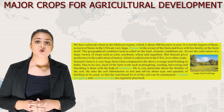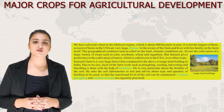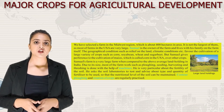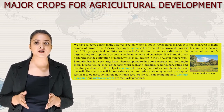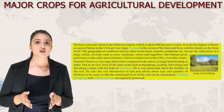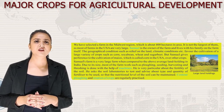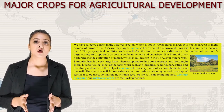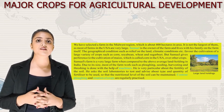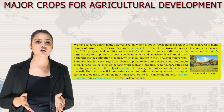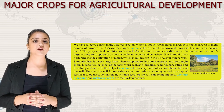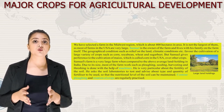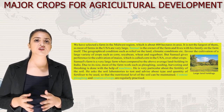We have selected a farm in the Midwest region, about 400 hectares in area. Samuel is the owner and lives with his family on the farm. The geographical conditions favor cultivation of corn, soya bean, wheat and sugar beet, but Samuel gives preference to maize (called corn in the USA). Samuel's farm is large compared to the average landholding in India, and most farm work — plowing, harvesting and threshing — is done with machines. He asks soil laboratories to test and advise on fertilizer use so that the nutritional level of soil is maintained. Contour plowing and rotation of crops are regularly practiced.